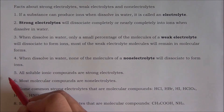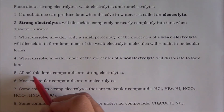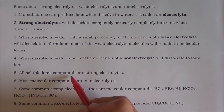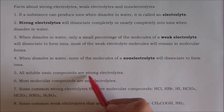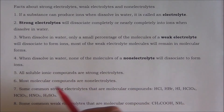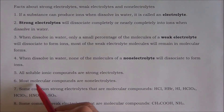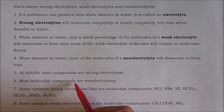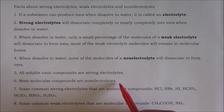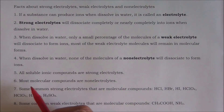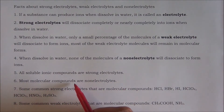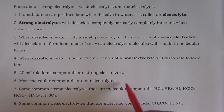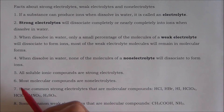Number five: all soluble ionic compounds are strong electrolytes. Number six: most molecular compounds are non-electrolytes. There are some molecular compounds that are not non-electrolytes. They are listed in number seven and number eight.